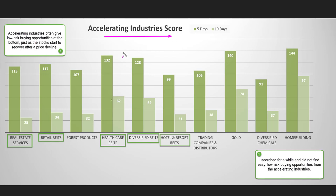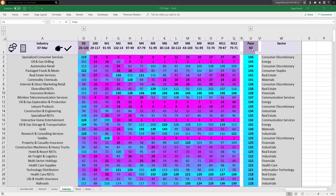Accelerating industries — those that were behind others earlier but now gaining momentum — often give low-risk buying opportunities at the bottom just as stocks start to recover after a price decline. I searched for a while and did not find any easy low-risk buying opportunities from the accelerating industries this week. You can find the most accelerating industries from QH, shown in cyan color under the pace column.